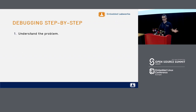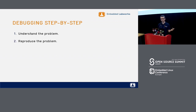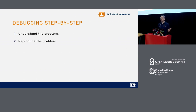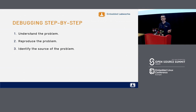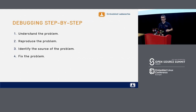Before I start talking about the tools, I want to talk a little bit about the process of debugging. When you have to debug something, you have to understand the problem. You have to be able to reproduce the problem — if you can't reproduce it, you don't know when you've solved it. You have to identify the source of the problem, and then fix it. These are the main four steps to debug anything in software. Our talk here is focused on the third step: identify the source of the problem.